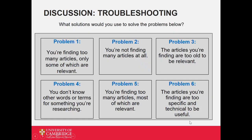So, what can we do if we get stuck? For example, with problem one — you're finding too many articles but not all of them are relevant. In this case, much like I did with the previous search, I would look at the search filters and use the Boolean terms to exclude irrelevant results.